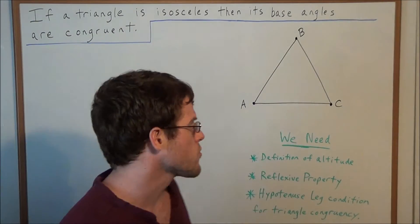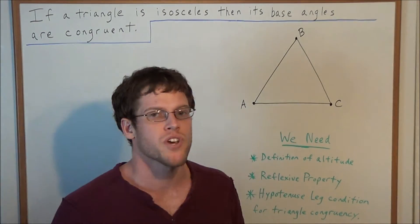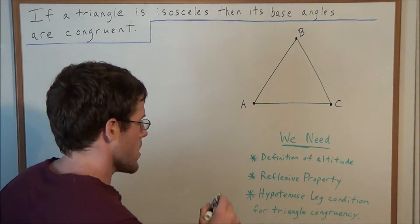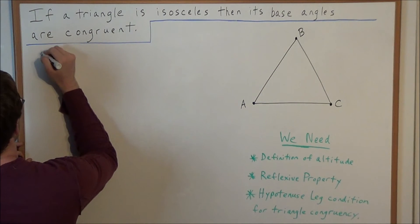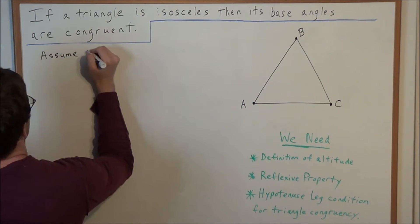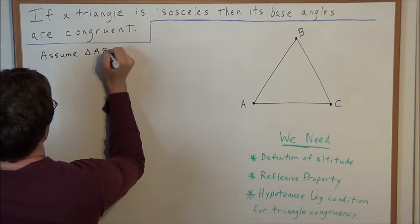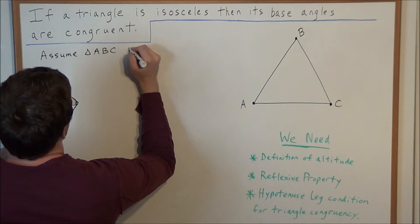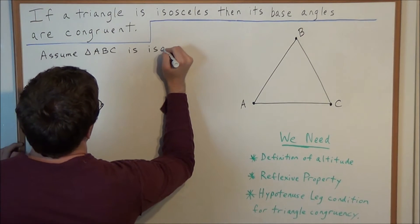So, to help us with this proof, we can consult this diagram of some general triangle ABC. And we can start off by assuming that triangle ABC is isosceles.